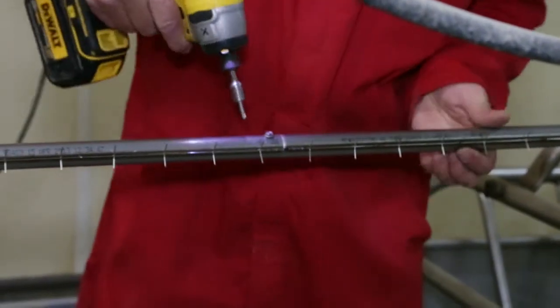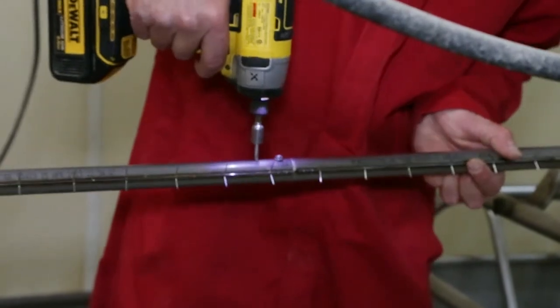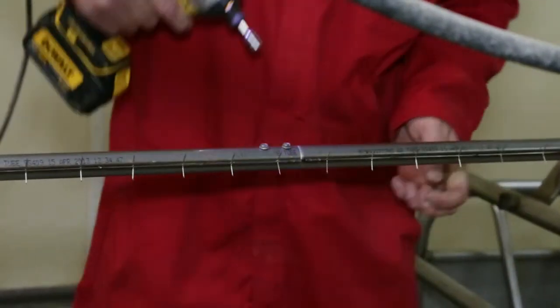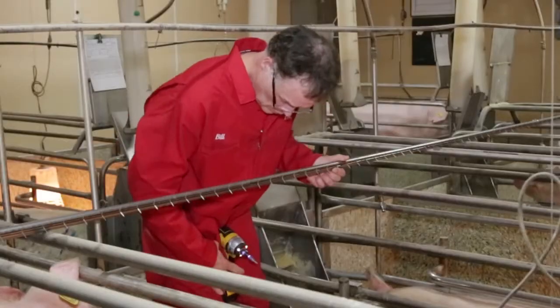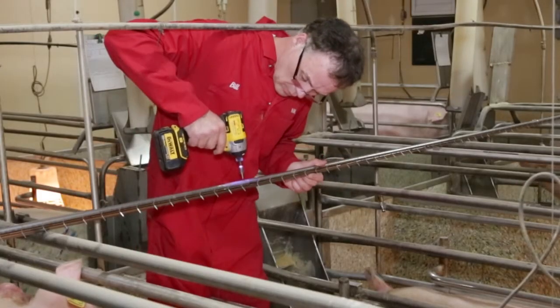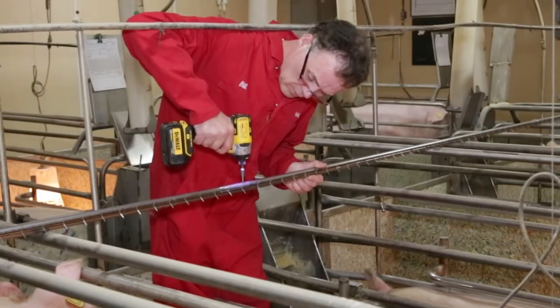Each swedge joint must have two self-tapping screws for maximum rigidity. If needed, use a small punch, make two small dents into the pipe at the location of the self-tapping screws. The dents will help guide the screws. Take care not to bend or damage the corona points welded to the pipes.